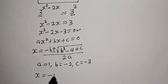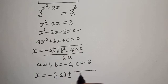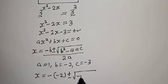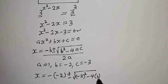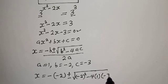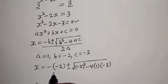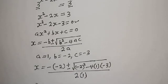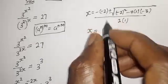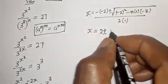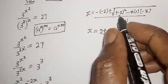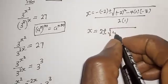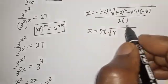So s is equal to minus bracket minus 2, plus or minus square root of minus 2 squared, minus 4 multiplied by a which is 1, multiplied by c which is minus 3. That gives us: s equals 2 plus or minus square root of 4 minus 4 times 1 times minus 3, which is 4 plus 12.